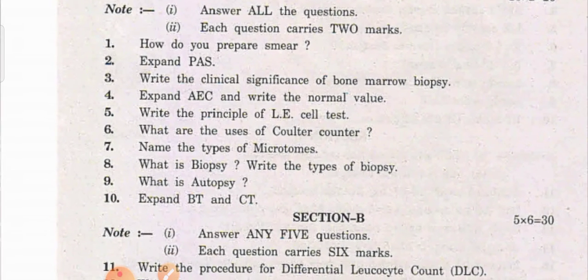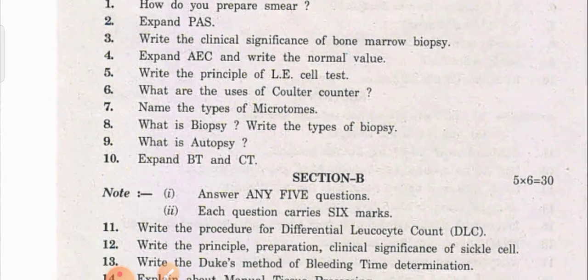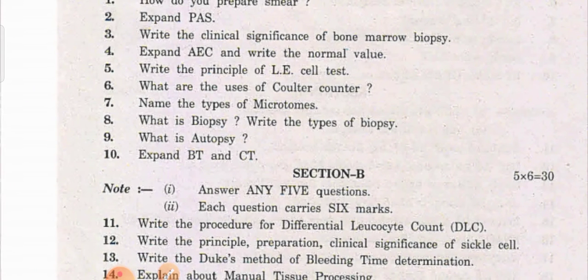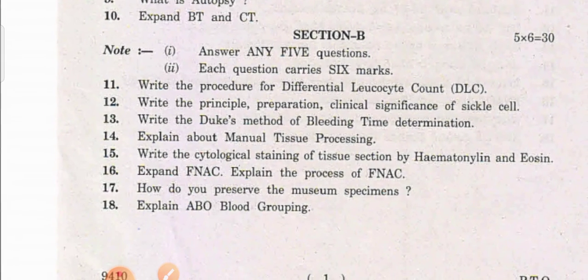Section A questions: How do you prepare a smear? Expand PAS. Write the clinical significance of bone marrow biopsy. Expand AEC and write the normal value. Write the principle of the LE cell test. What are the uses of the cell counter? Name the types of microtomes. What is biopsy? Write the types of biopsy. What is autopsy? Expand BTCT — clotting time, bleeding time.